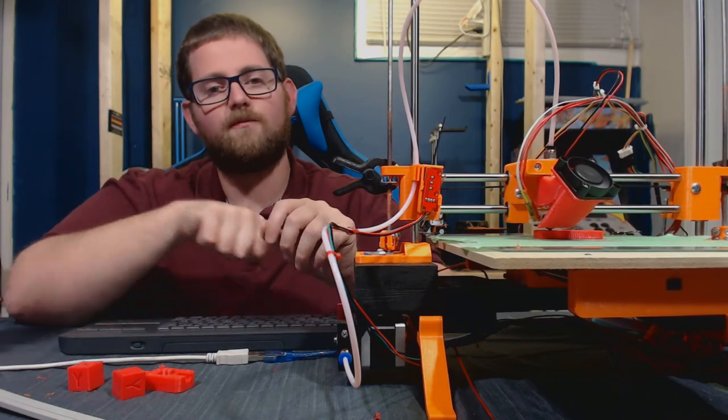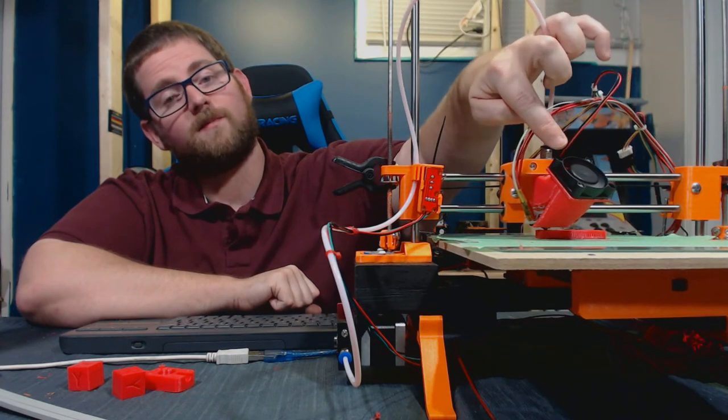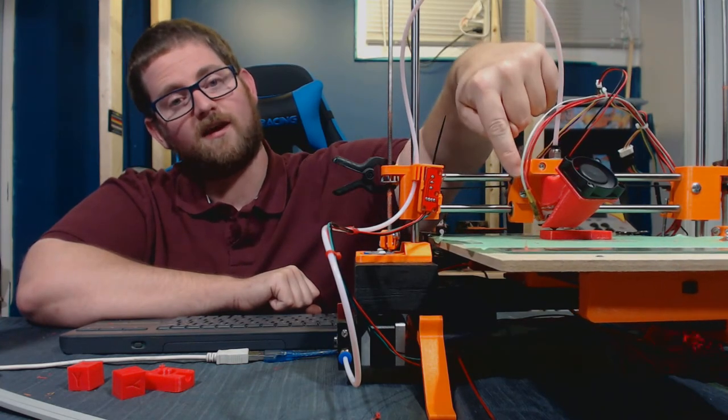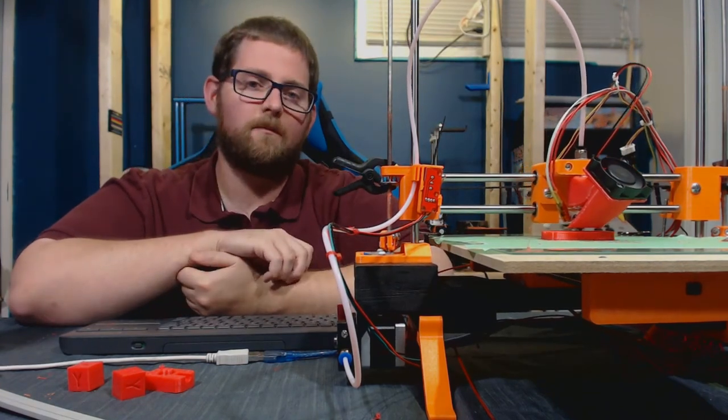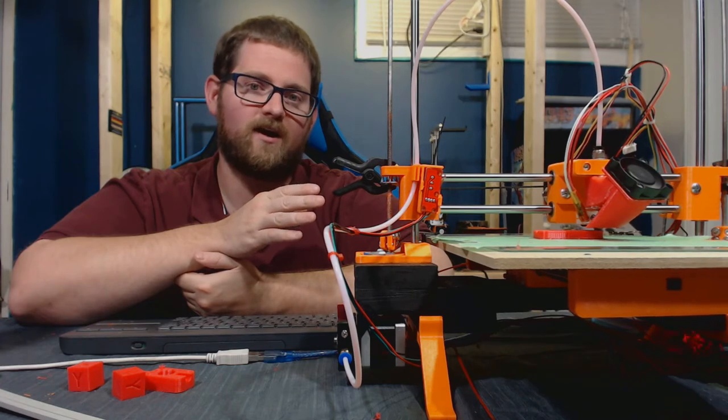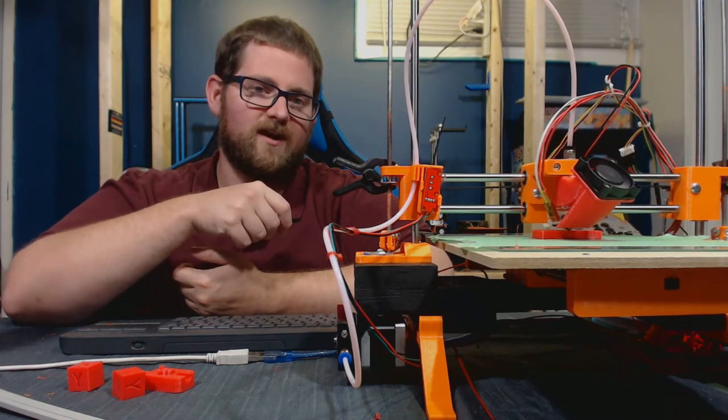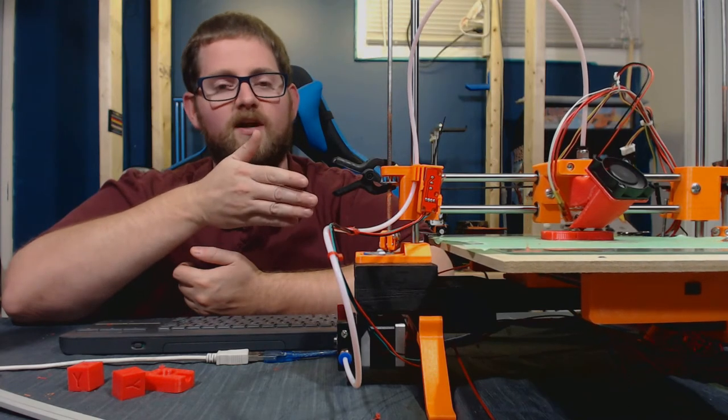With my calibration dialed in and my parts coming out dimensionally accurate, I went ahead and printed a shroud for the heatsink. This shroud divides the airflow from my 40 millimeter fan between the heatsink and the actual part. It works okay, the parts are definitely coming out cleaner. I printed a pretty successful benchy off of this design.